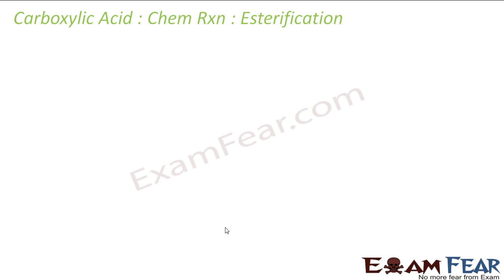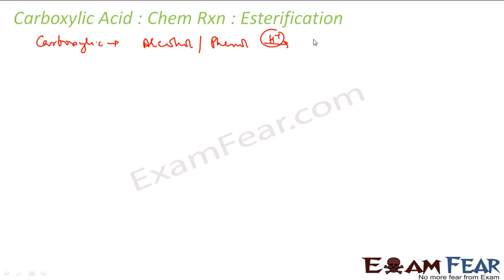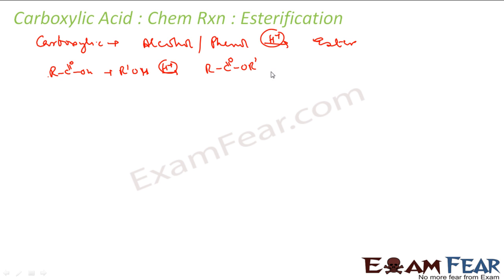The next is esterification from carboxylic acid. For esterification we take carboxylic acid and react it with alcohol or phenol in the presence of H+ ions, and it gives you an ester. The products are RCOOR' and a water molecule.